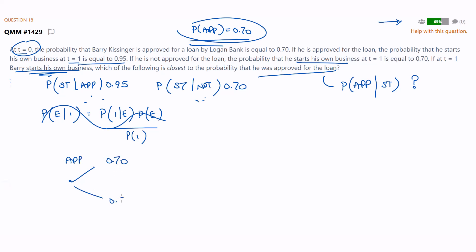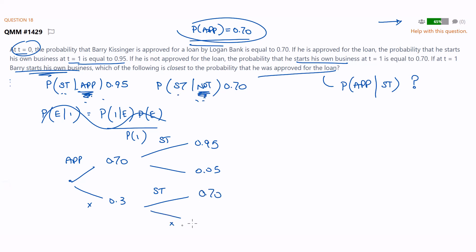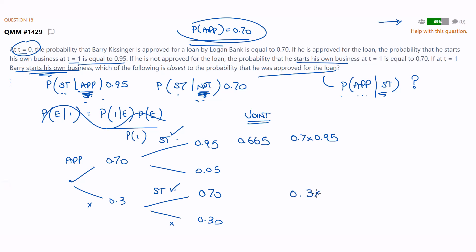Approved 0.7, and it's going to be 0.3 down here for not approved. If he's approved, the probability he starts his business given he is approved is 0.95, so this branch is 0.05. And starts his business given he's not approved is 0.7, so that branch would be 0.3. Now we need the probability he's approved given he started his own business, so given he started means we're either on the approved branch or the not-approved branch. We work out the joint probabilities: 0.7 times 0.95 equals 0.665, and 0.3 times 0.7 equals 0.21.